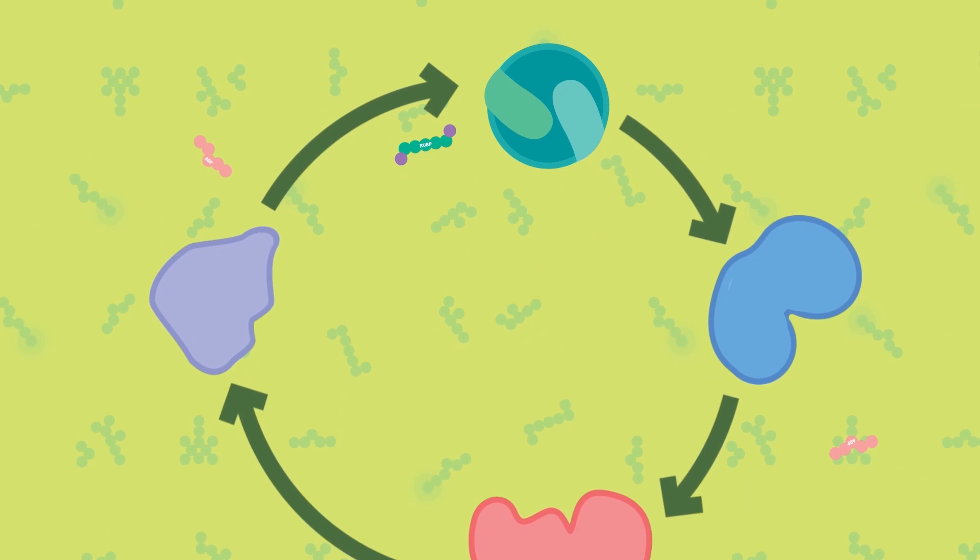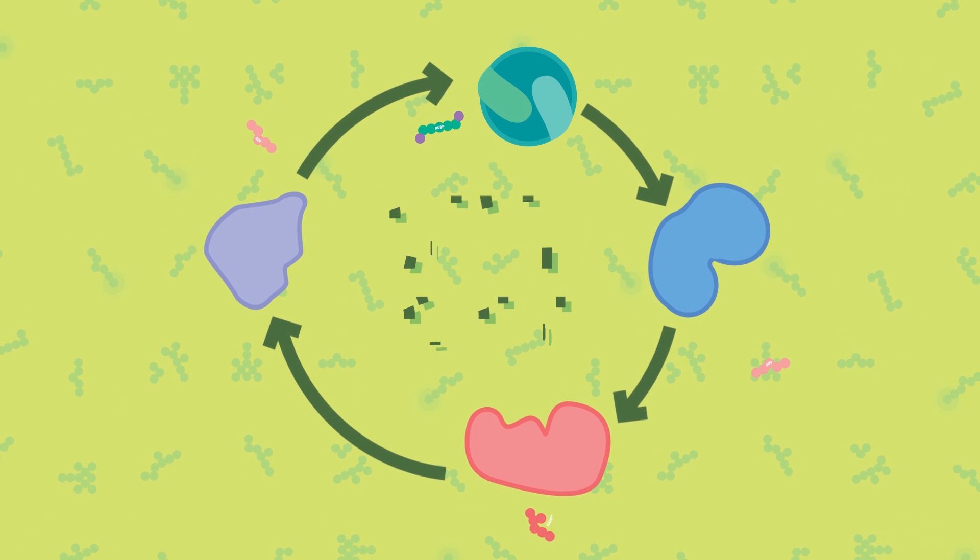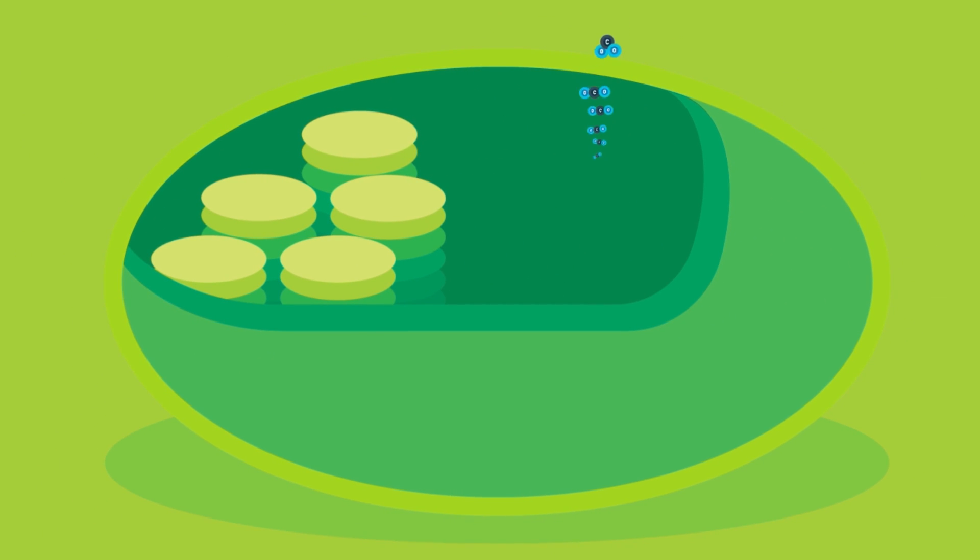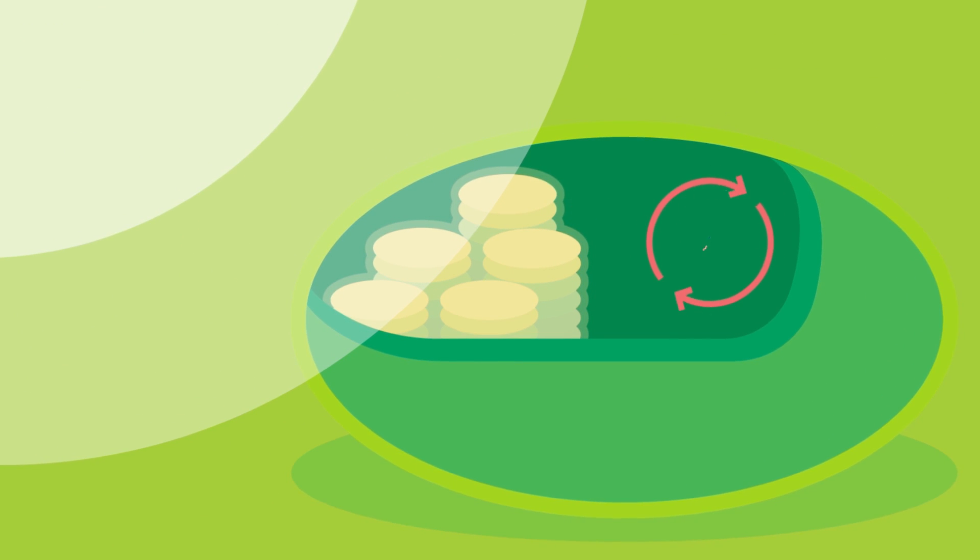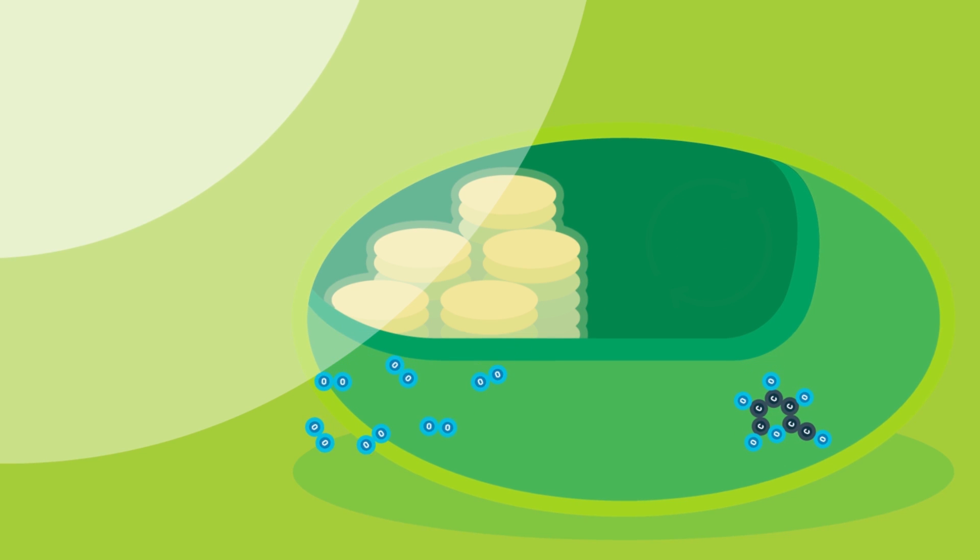Because these series of reactions start and end with the same molecule, they are referred to as a cycle. Specifically, the Calvin cycle. The overall complete photosynthesis reaction will be needing 6 carbon dioxide molecules and 6 water molecules powered by the sun energy to eventually produce glucose and 6 oxygen molecules.